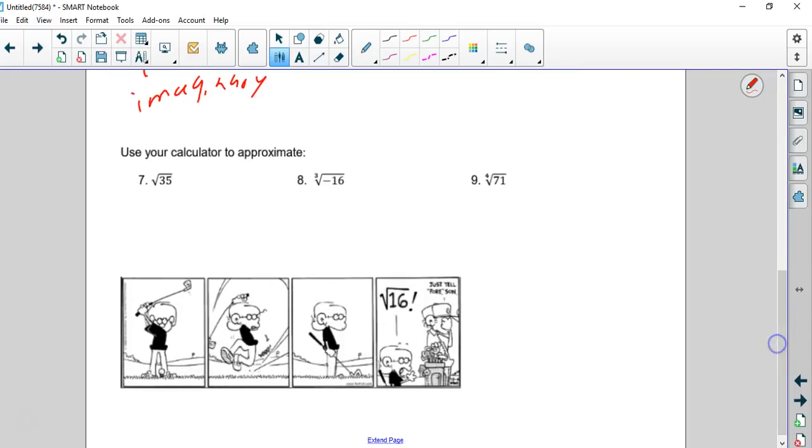Now, this next part, easy breezy. You're going to use your calculator to approximate. You're going to get a decimal. So for number 7, you're going to type in the square root, second square root, 35. About 5.9. Now, think about it. It makes sense. 35 is very close to 36, which is a perfect square. This is right under 36, so our answer should be just under 6, and it is.